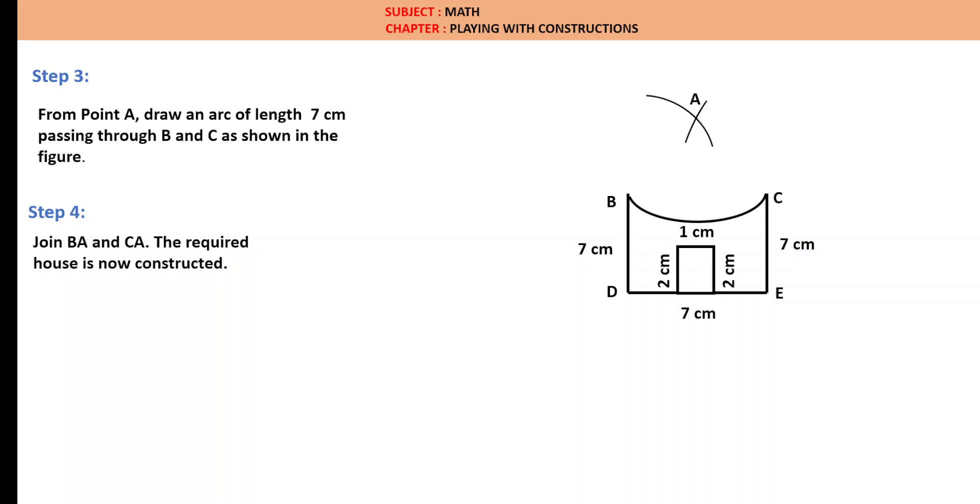Step 4: Join BA and CA. The required house is now constructed. Now AB is 7 cm and AC is 7 cm. ABDEC is the required house with the walls as 7 cm.